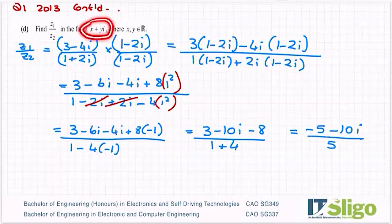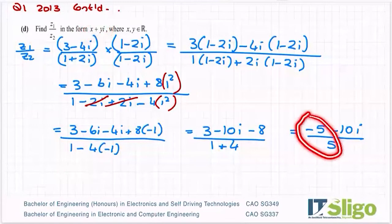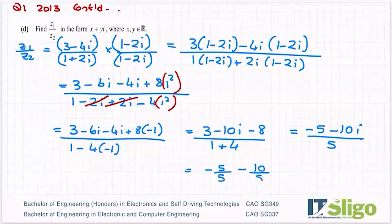We have to write it in the form x plus yi. So that's my real part x, that's my imaginary part. The 5 goes under each bit. So that's minus 5 over 5 minus 10 over 5i. These simplify down. 5 over 5 is minus 1, and 10 divided by 5 is 2. So it's minus 1 minus 2i is the answer to that question.